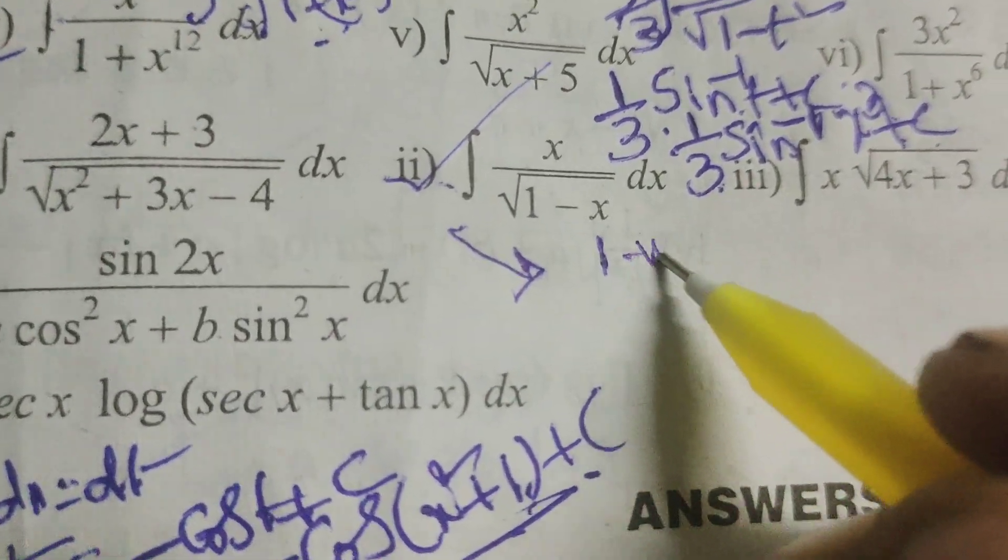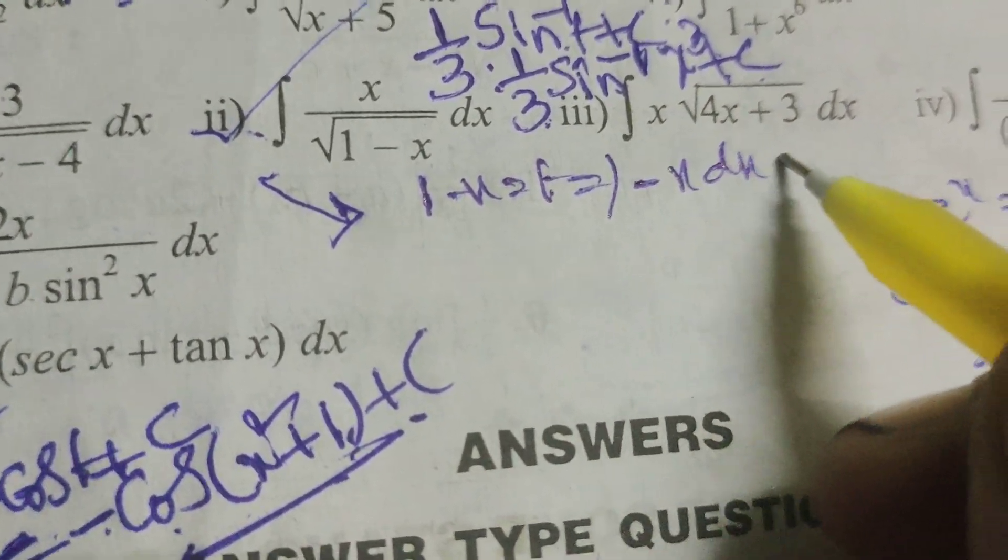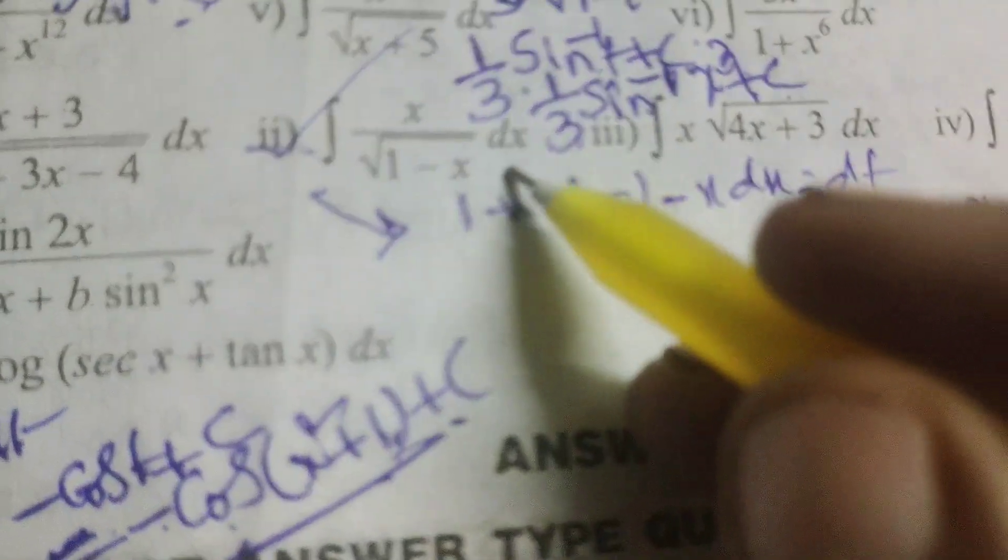Here put 1 minus x equals to t. Then differentiate this: minus dx equals to dt. Now we want here x dx.